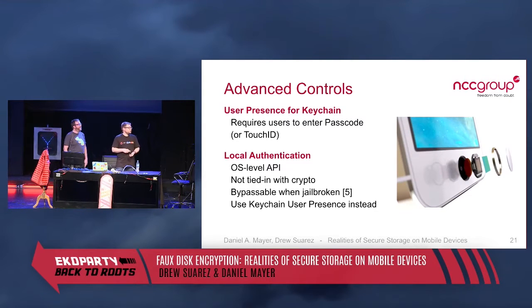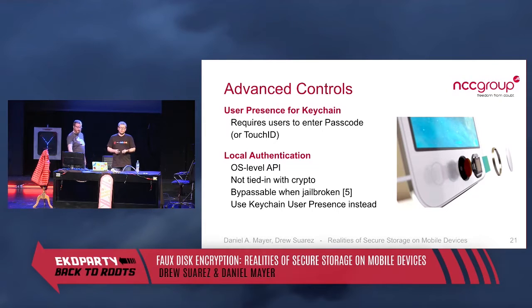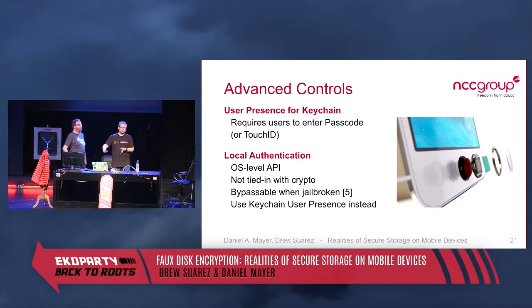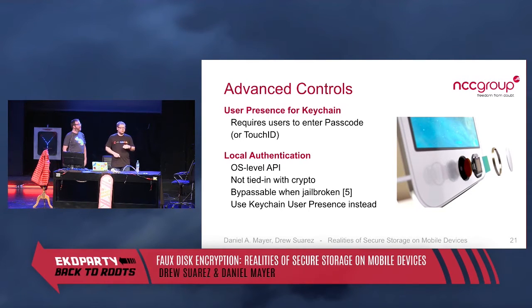Beyond unlocking the device, there are two interesting application-level Touch ID features. The first is tied to the Keychain: reading a specific Keychain item will require fingerprint or passcode authentication. This moves from 'data is encrypted when the phone is off' toward 'data is protected until you actually need it — and you authenticate at that exact point.' The second is Local Authentication, an OS-level API not tied to hardware or crypto. If you can root the phone via jailbreak, you can bypass Local Authentication entirely — but not the Keychain-backed Touch ID.